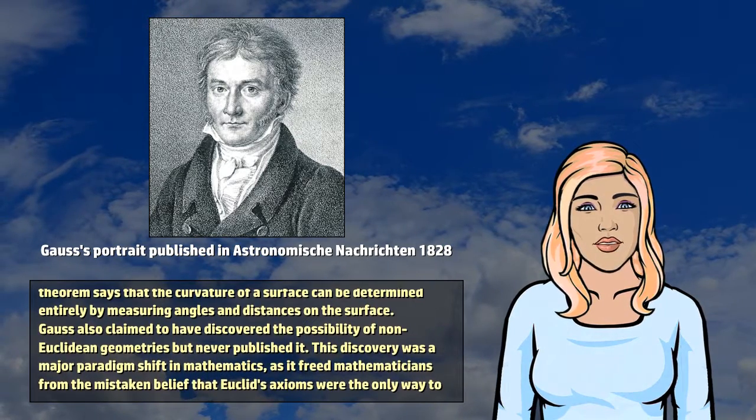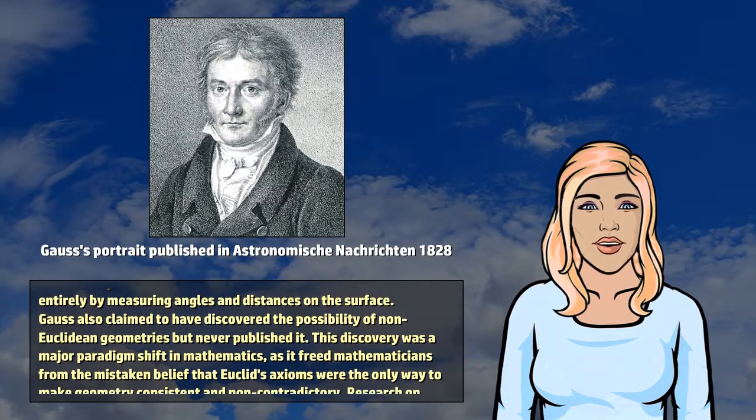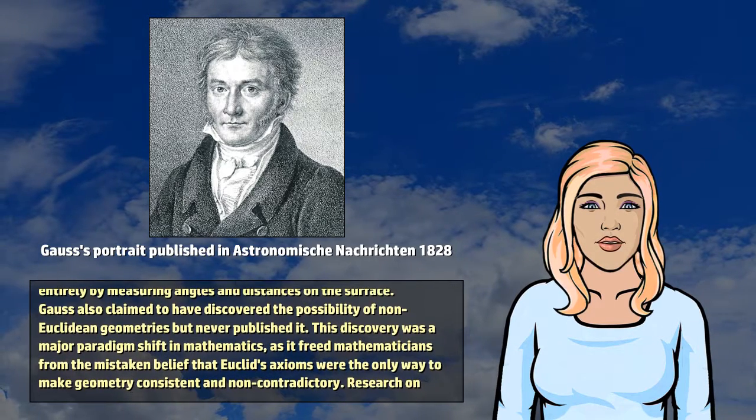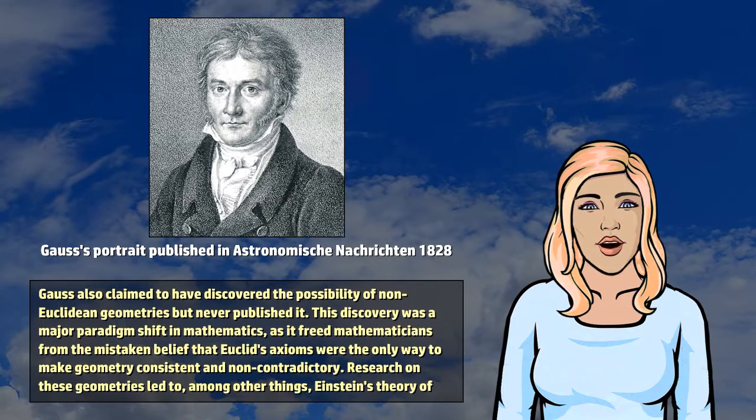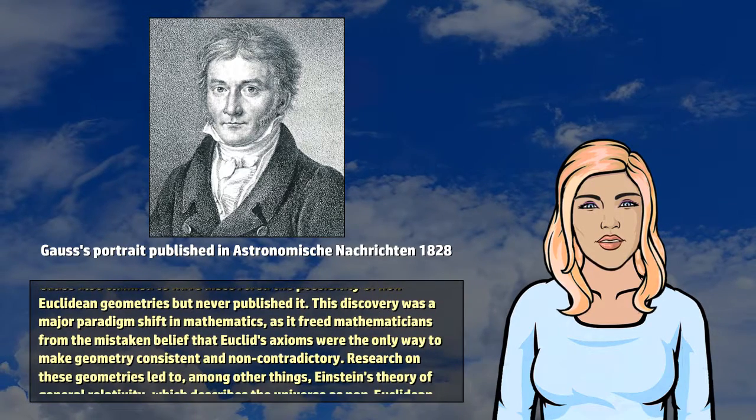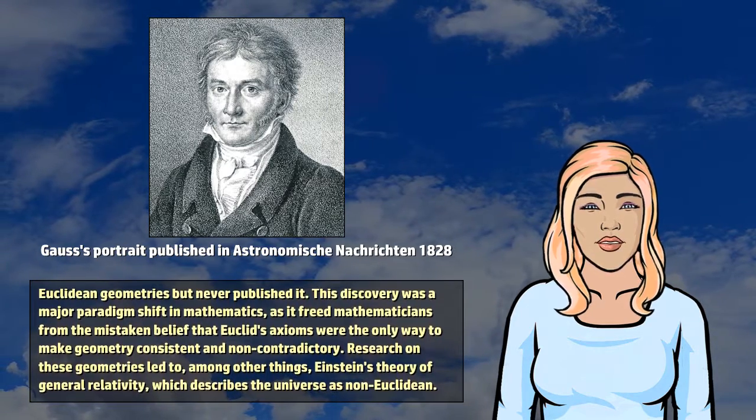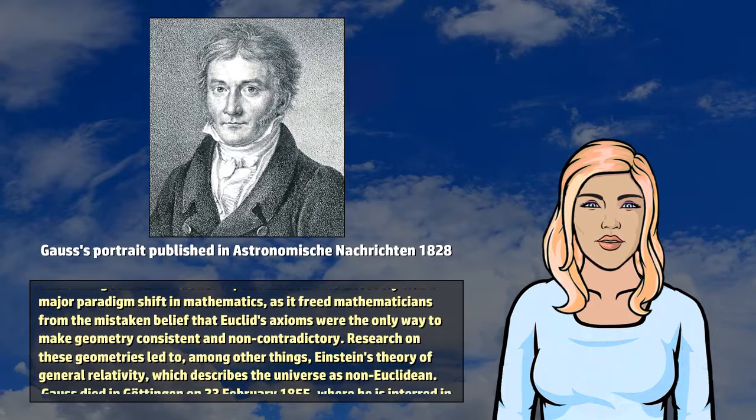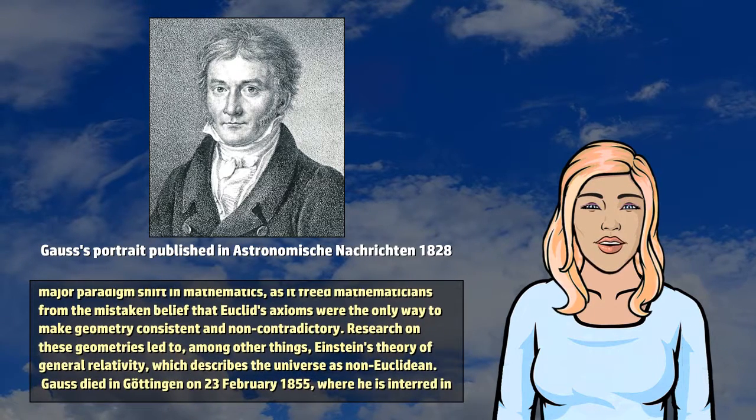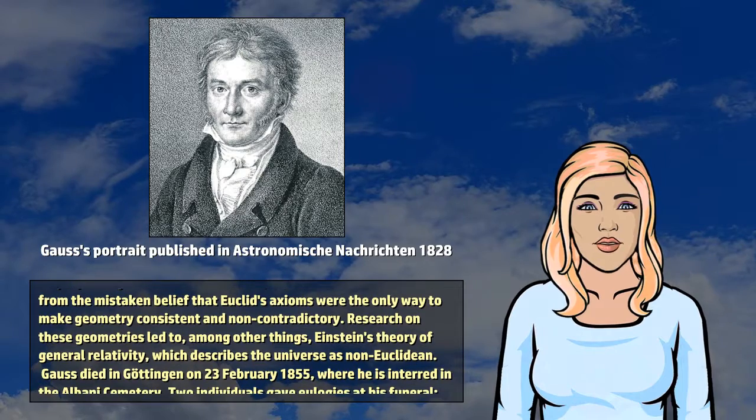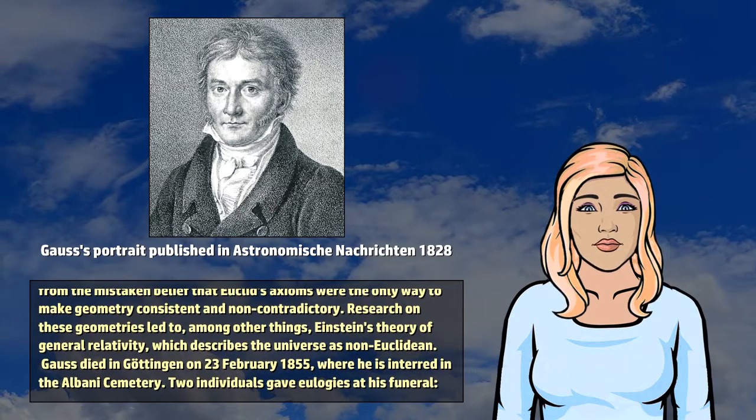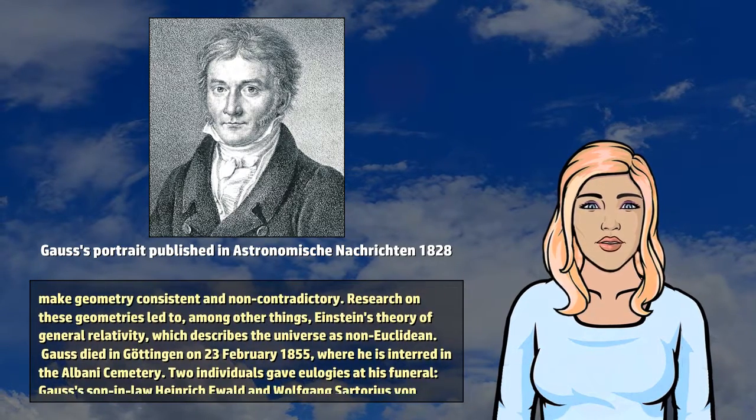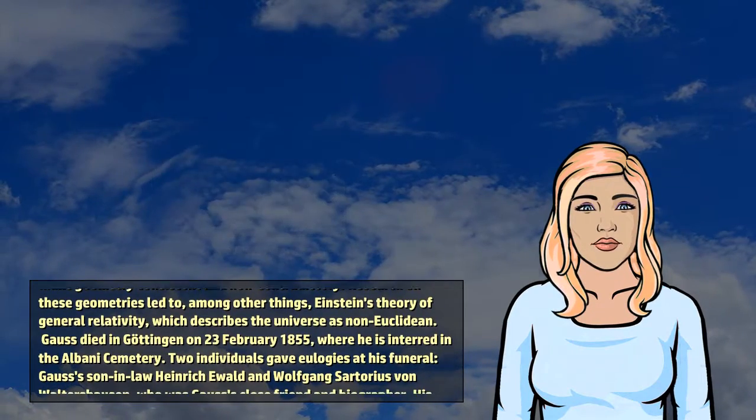Gauss also claimed to have discovered the possibility of non-Euclidean geometries but never published it. This discovery was a major paradigm shift in mathematics, as it freed mathematicians from the mistaken belief that Euclid's axioms were the only way to make geometry consistent and non-contradictory. Research on these geometries led to, among other things, Einstein's theory of general relativity, which describes the universe as non-Euclidean.